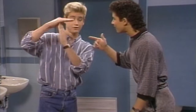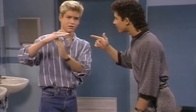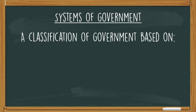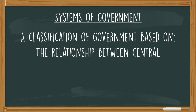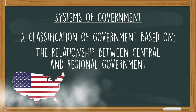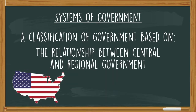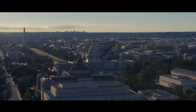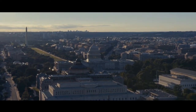Wait, time out! Are you telling me that countries have more than one government? Every country is going to have a national or central government — that's the government for the entire country. If you live in the United States, think about Washington DC.